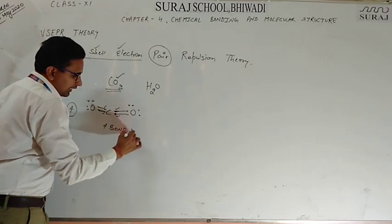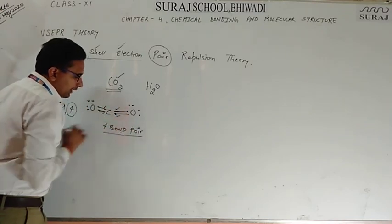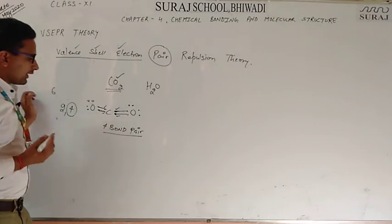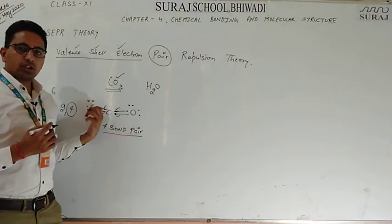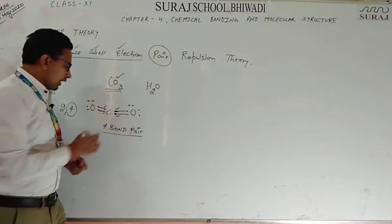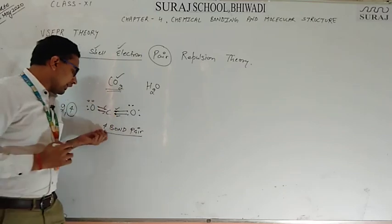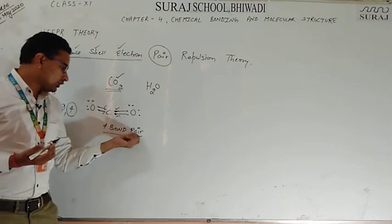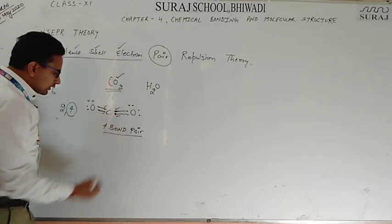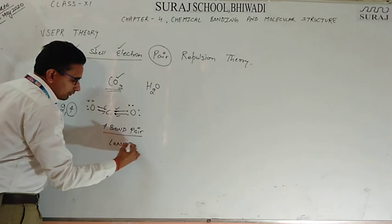What is a bond pair? A bond pair is the electrons which are bonding — the electrons which are shared. Carbon has four electrons shared, so the bond pair count is four. The other type is the lone pair — the electrons which are not shared.